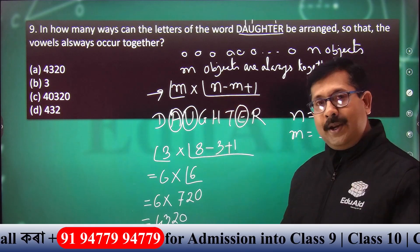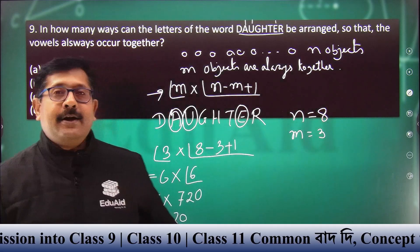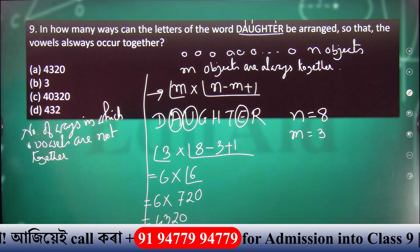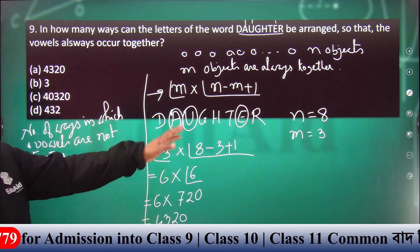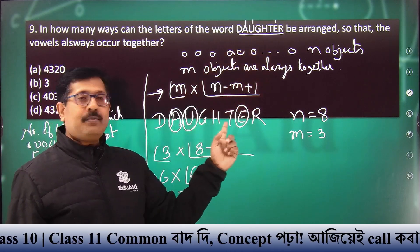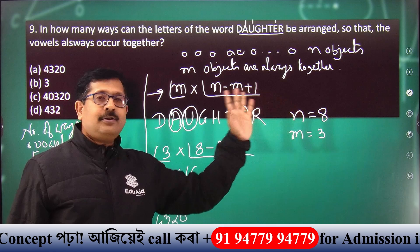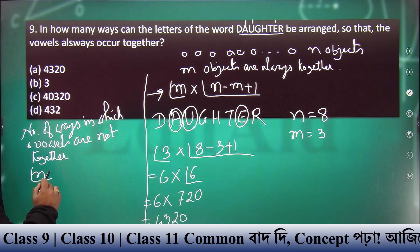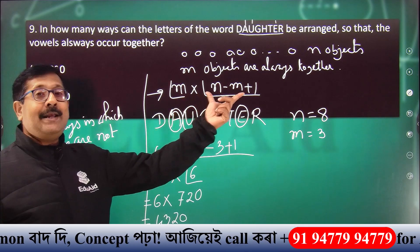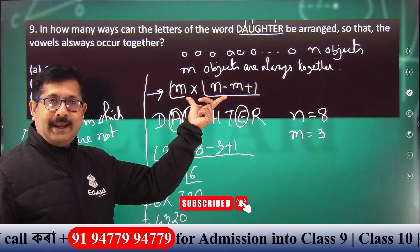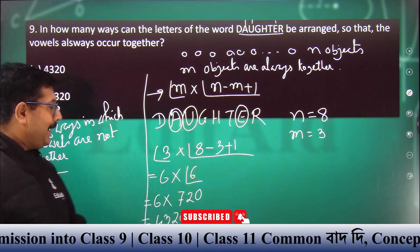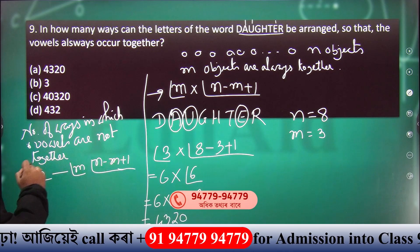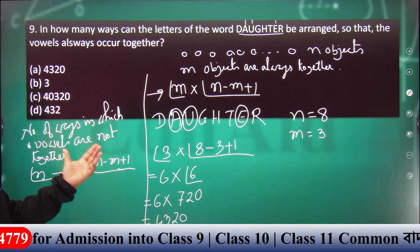In how many ways can the letters of the word DAUGHTER be arranged so that vowels always come together? If there are n objects out of which m objects are always together, then total number of arrangements is factorial of m multiplied by n minus m plus 1 factorial. If vowels are not together: number of ways in which vowels are not together equals total arrangement — factorial of n, as all letters are different.